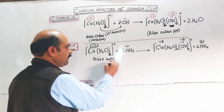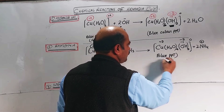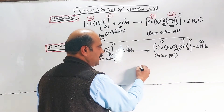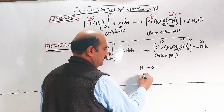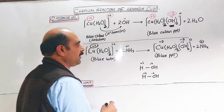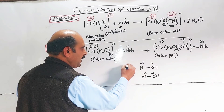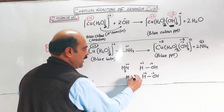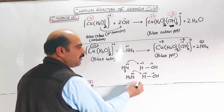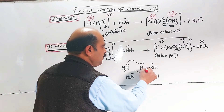Note the difference: from six water molecules, four remain — a decrease of two. The ammonia molecule, having a lone pair of electrons, attacks the partial positive hydrogen of water and removes the hydrogen ion.